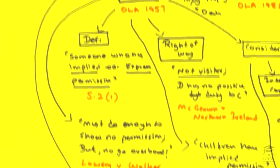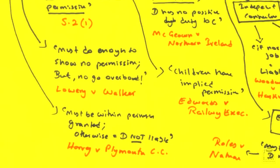On the other hand, children are considered to have an implied permission granted, as in Edwards v the relevant authority. This is quite frankly a policy initiative to make sure there is some form of redress for children. There is a key point to suggest that occupiers have gone to great lengths to ensure permission is not granted, and to indicate to anyone passing by or attempting to enter the property that no permission is being given. Library v Walker states that they must do enough to indicate that no permission is granted, but not go overboard. Walker is a very interesting case, available in the case summaries.